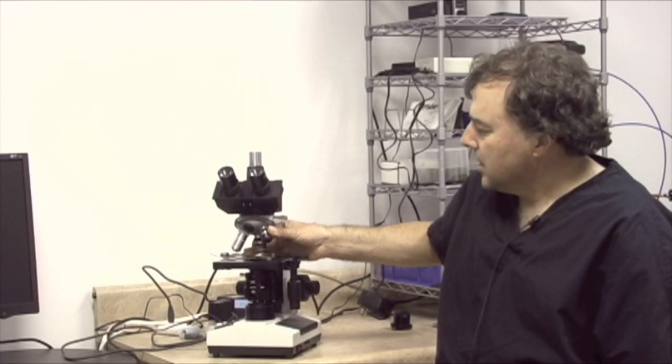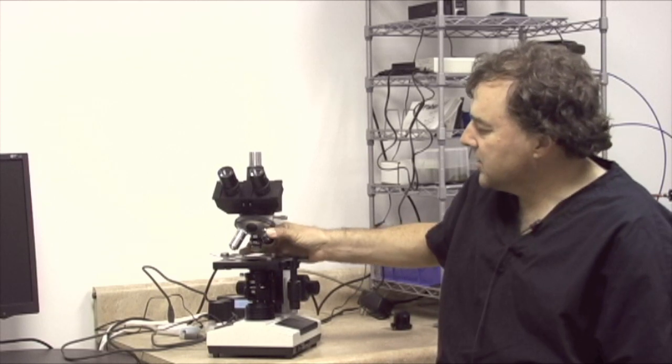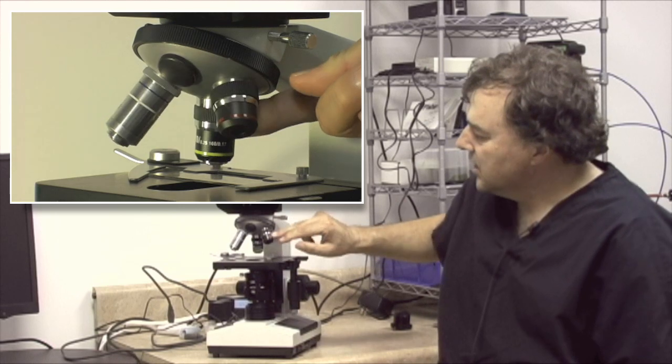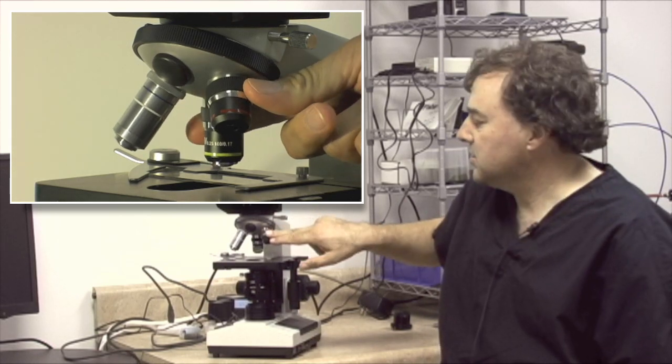Beneath the eyepieces is the objective lens turret. That's this gadget here which is used to position the different lenses. There are three different objective lenses on this particular scope.